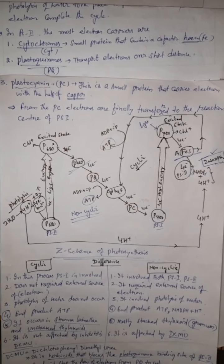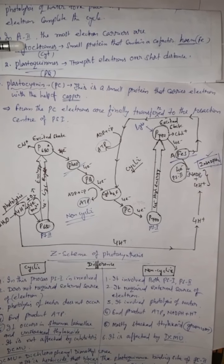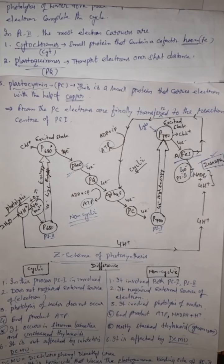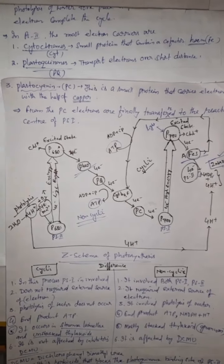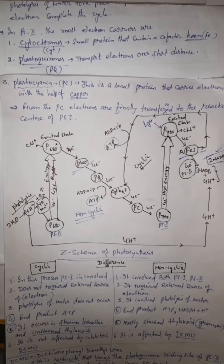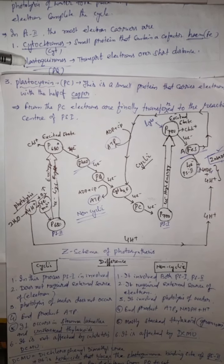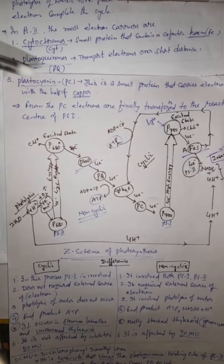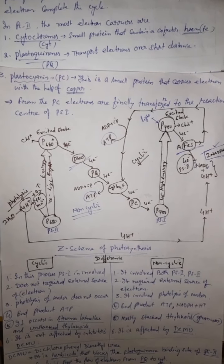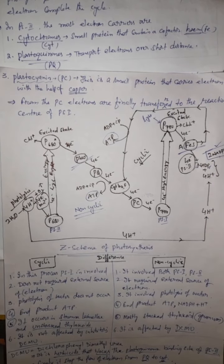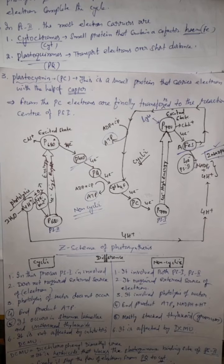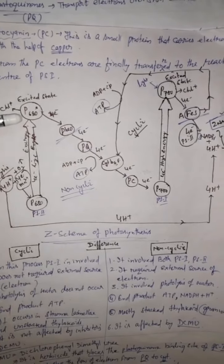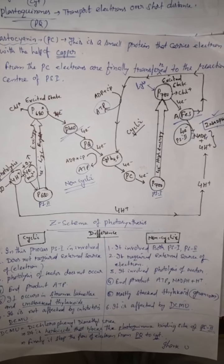Cytochrome (abbreviated CYT) is a small protein containing a cofactor — heme — which consists of iron. Plastoquinone (PQ) transports electrons over short distances. From plastocyanin (PC), electrons are finally transferred to the reaction center, that is PS1. Now let us discuss the Z-scheme of photosynthesis very carefully, as it is very important and many NEET questions are asked from this sketch.